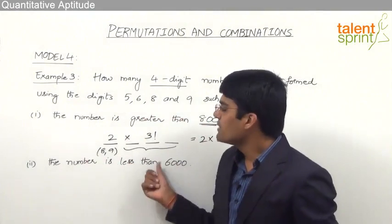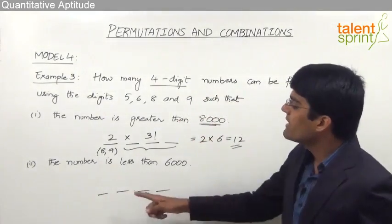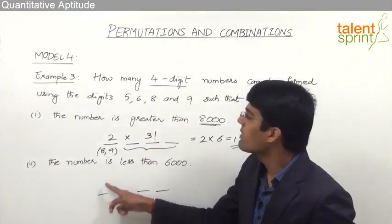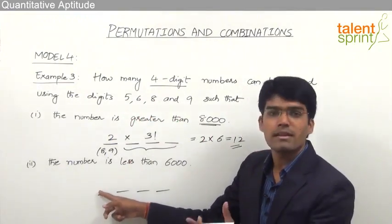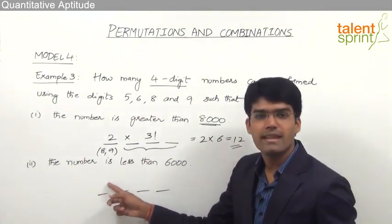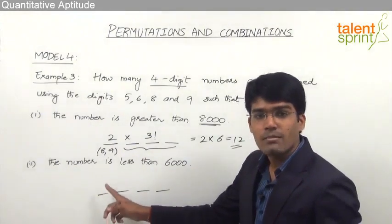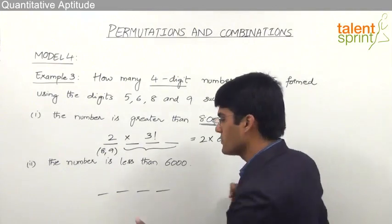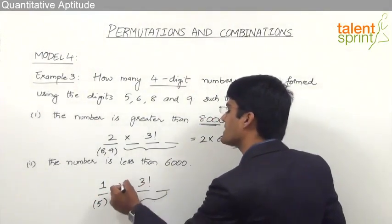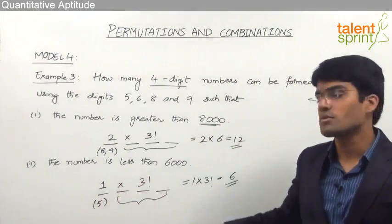For condition (b), the number should be less than 6000. The digits are 5, 6, 8, and 9. If we want the number to be less than 6000, the first position cannot be 6 — because if thousands place is 6, the number is 6000 or more. It also cannot be 8 or 9, since those make the number greater than 6000. Only 5 can come in the first position, giving just 1 choice. The remaining 3 digits fill 3 positions in 3! ways. So the answer is 1×3! = 1×6 = 6. Thus 6 numbers can be formed less than 6000, and 12 numbers greater than 8000.